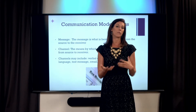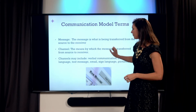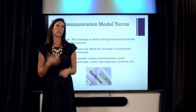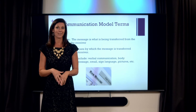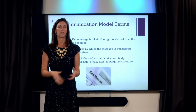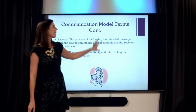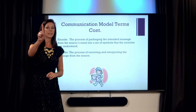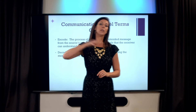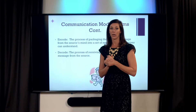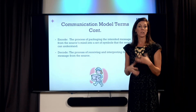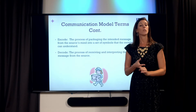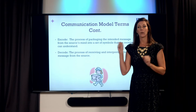Think about the limitations of some channels. If you need to have a serious conversation, doing it via text message might feel easier because it's less risky, but a face-to-face or phone conversation might be better. The process of encoding is when the sender picks what they're going to say, picks the channel, packages it up, and sends it to the receiver. The receiver does a process called decoding — interpreting the message using content, channel, nonverbal communication, and other available clues.